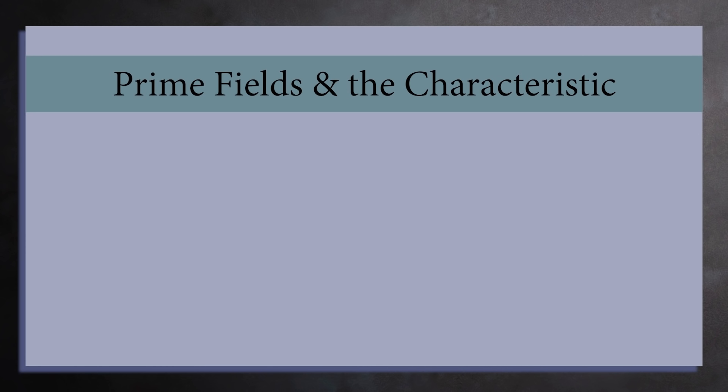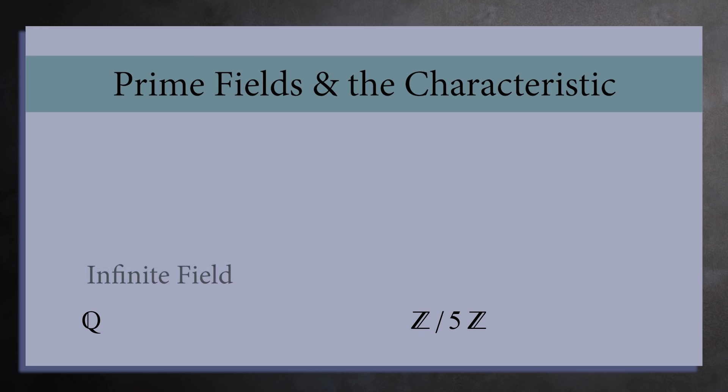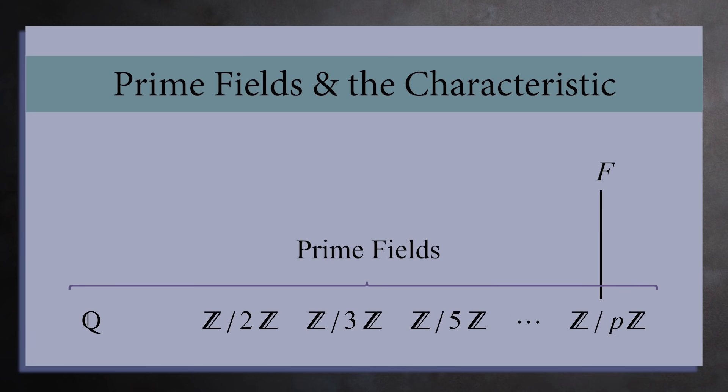Let's return to the two examples of a field we just saw, the rational numbers and the integers mod 5. The rational numbers are denoted by Q for quotient, since every number in this field is a quotient of two integers. The rationals are an infinite field, while the integers mod 5 are a finite field. But the integers mod 5 are not the only finite field. In fact, the integers mod p for any prime number p is also a field. Together, these form the starting points for all fields. That is, if you pick any field F, then it will contain one and only one of these fields as a subfield. We call these fields prime fields, and say that F is an extension field.